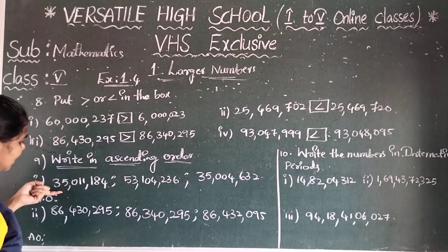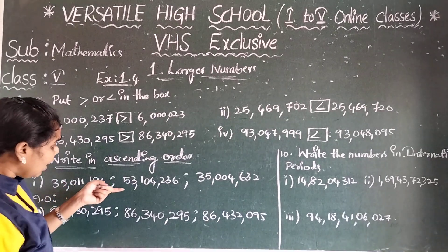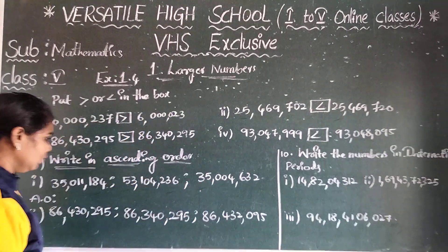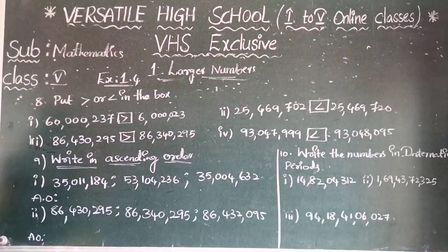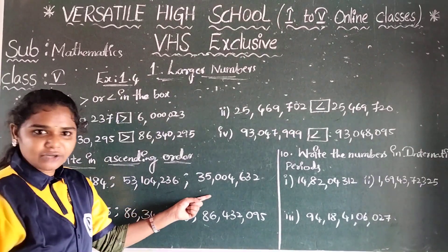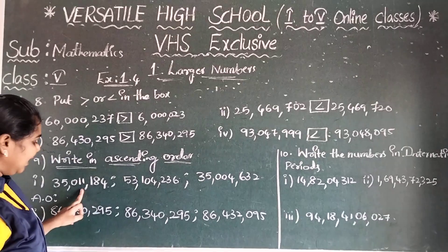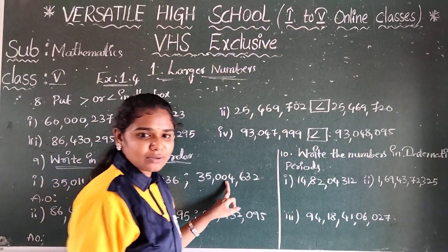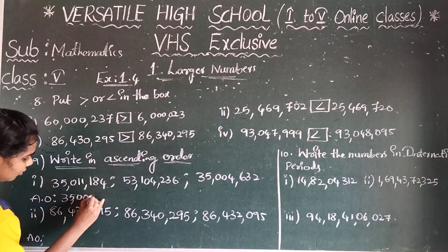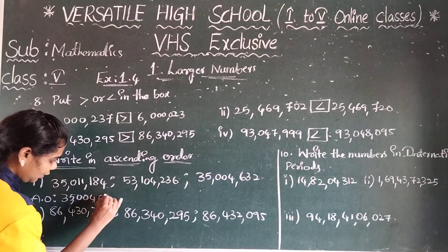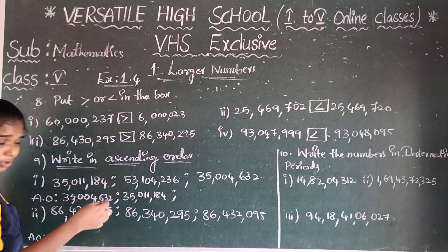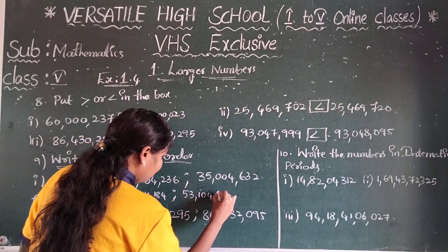First question: arrange 35,011,184 and 53,104,236 and 35,004,632 in ascending order. Both 35 millions are smaller than 53 millions. Compare the thousands place: 4,000 is smaller than 11,000. So the order is: 35,004,632 then 35,011,184 then 53,104,236.